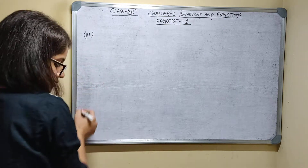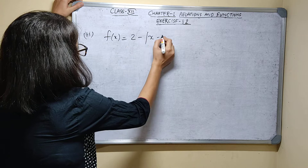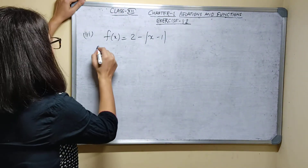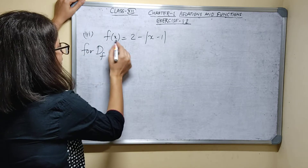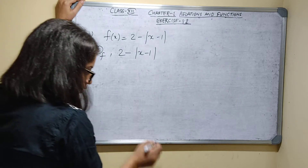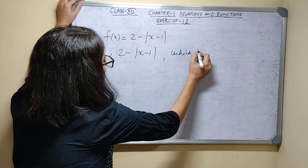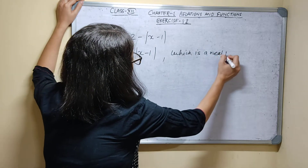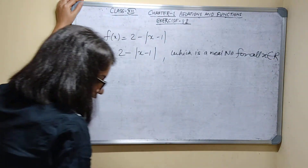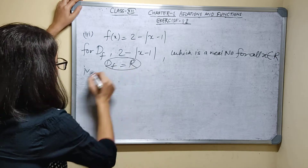Third part: f(x) is equal to 2 minus mod of x minus 1. For domain of a function, this must be a real number. You know, for any real value of x, 2 minus mod of x minus 1 will be a real number. For all x belonging to real numbers, this is a real number. So domain of function is all real numbers.